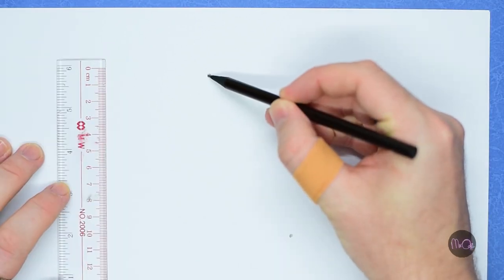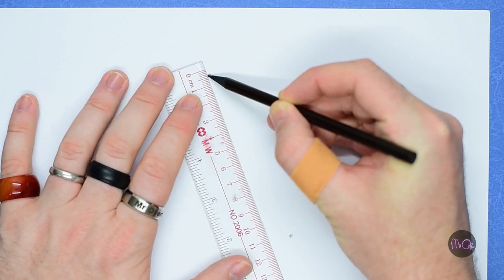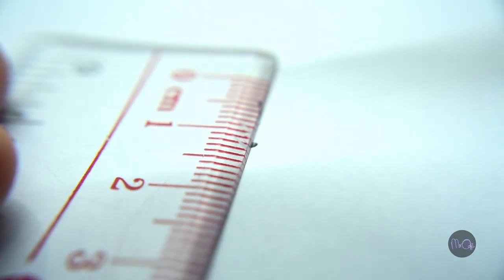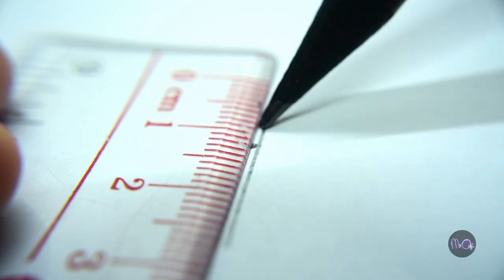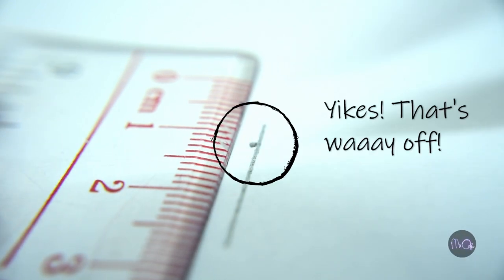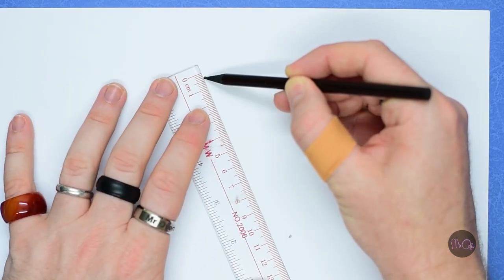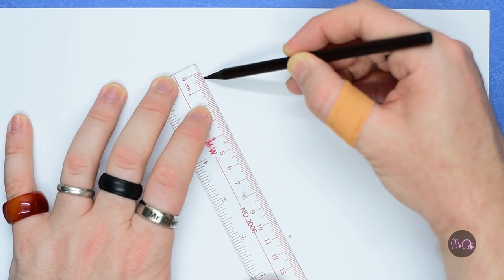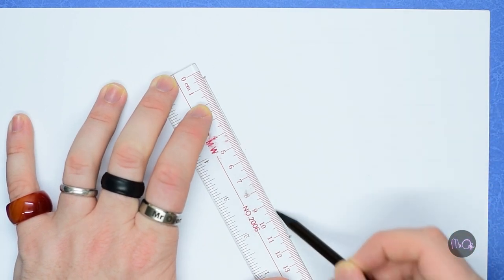When drawing a line between two points, put your pencil onto the first point and move the ruler up to it. This is because the pencil lead has some width too and may add a millimeter or more to your measurement. Draw down from the first point to about halfway, then draw up from the second point. This is so you don't go too far over the second point.